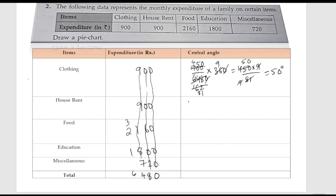Next is house rent, which is also 900. So 900 divided by 6480 multiplied by 360 degrees. After cancellation we will get 50 degrees for house rent as well.